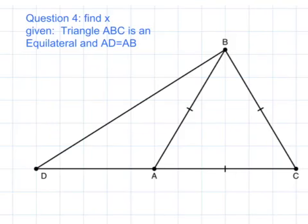In question 4, they're asking us to find angle X, given that triangle ABC is equilateral and AD is congruent to AB.